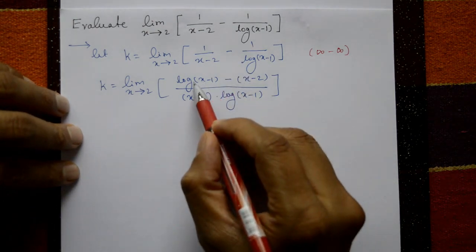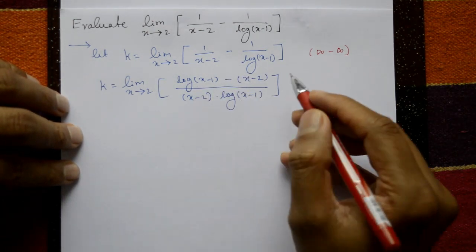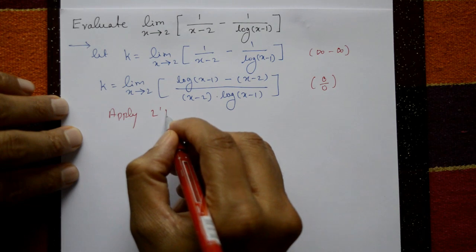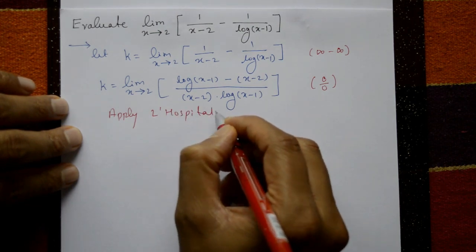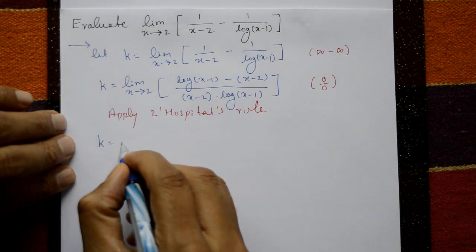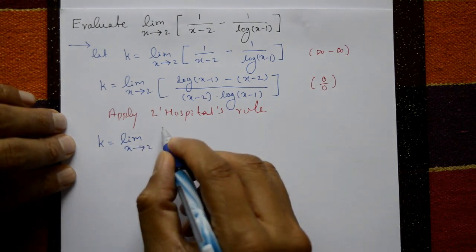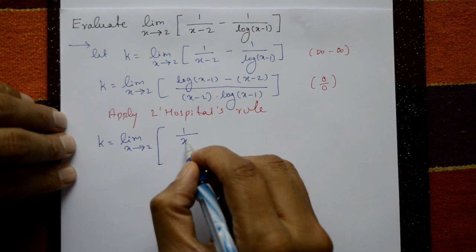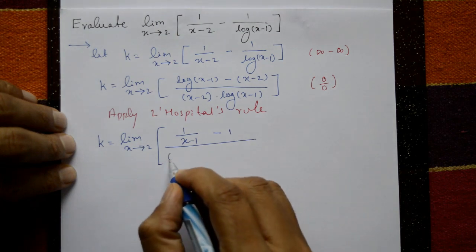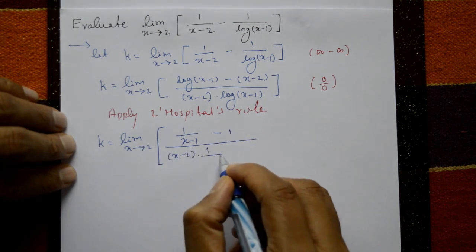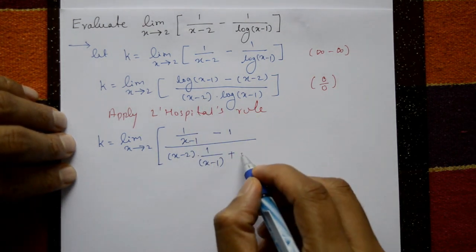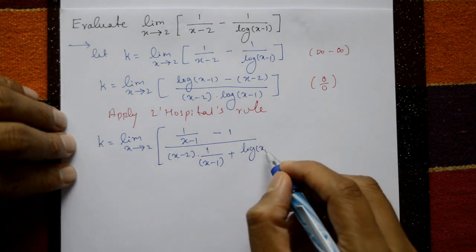Taking x = 2: log(2-1) = log 1 = 0, so numerator = 0 and denominator = 0·0 = 0. This is 0/0 form. Apply L'Hôpital's rule: differentiate the numerator — derivative of log(x-1) is 1/(x-1), minus 1. For the denominator, use product rule: (x-2)·[1/(x-1)] plus log(x-1).